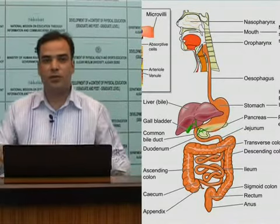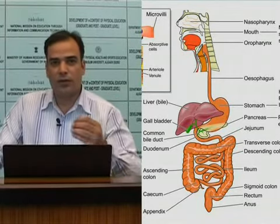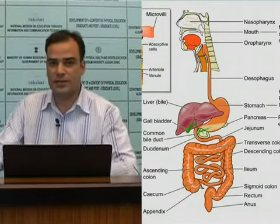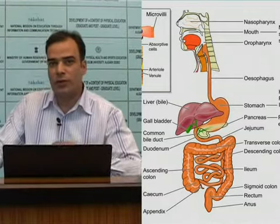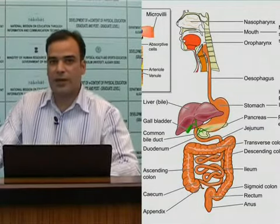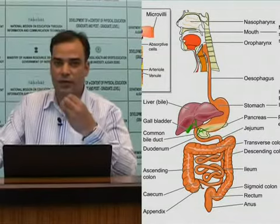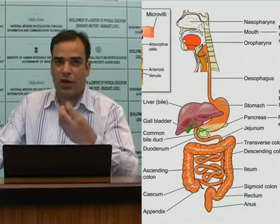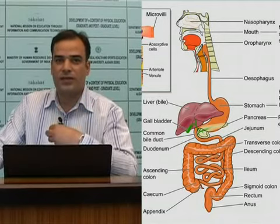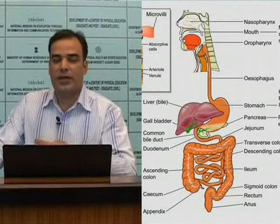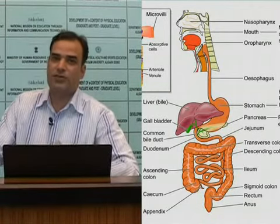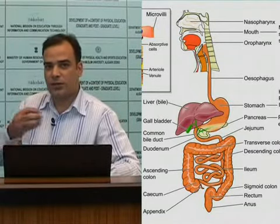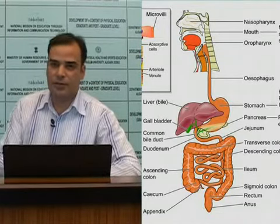By movements we mean the movement of food from the mouth to the esophagus, from the esophagus to the stomach, and from the stomach to the intestines. Unless and until food does not move within our digestive system, it cannot be digested. If food stays in the mouth, it cannot serve the purpose. From the mouth, if it goes into the esophagus and does not move ahead into the stomach, it cannot be acted upon by the digestive juices of the stomach. The movement of food through all parts of the GIT is very important.